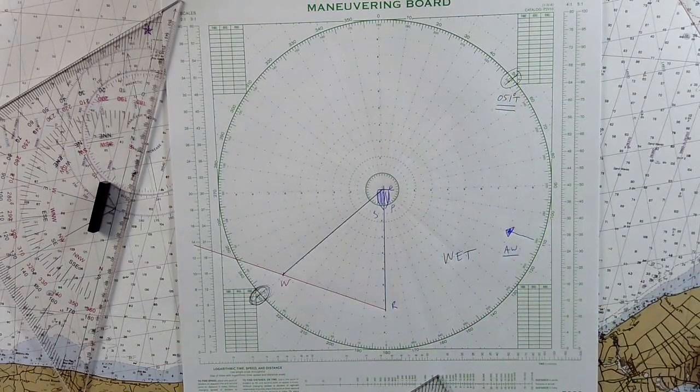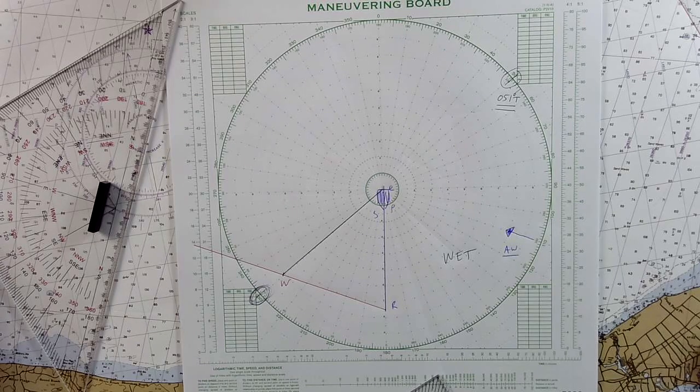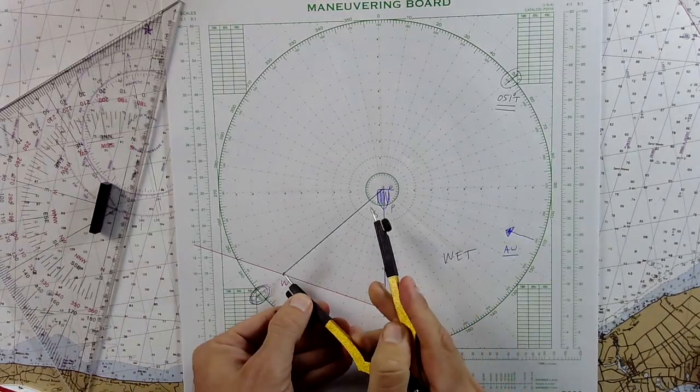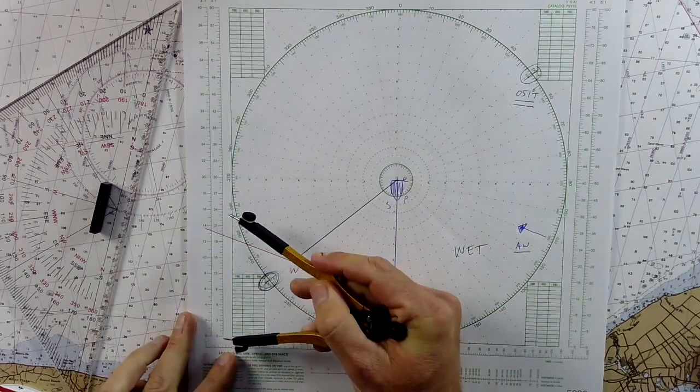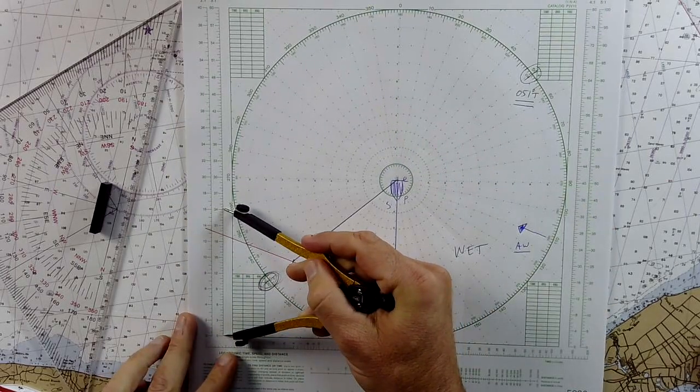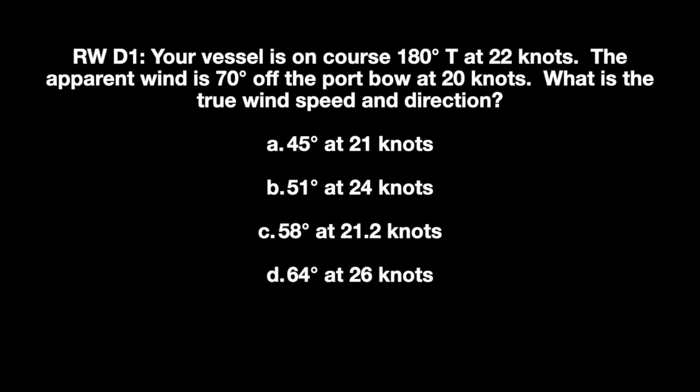Okay, so that illustrates kind of the direction of the wind, but what about the speed of the wind? It's going to be equal to the distance of this vector here on a 3 to 1 scale. So about, you know, 24 knots is what we've got there.